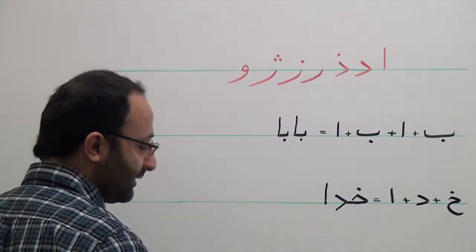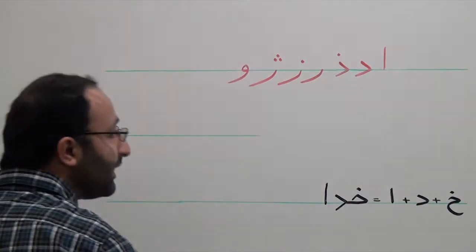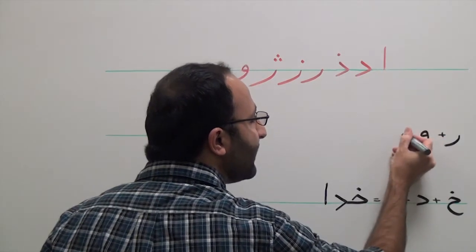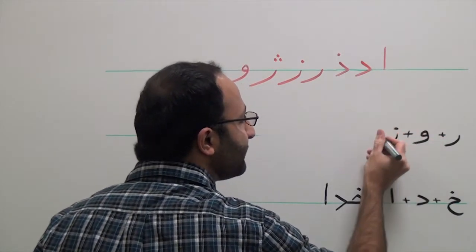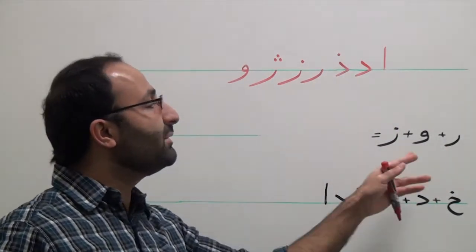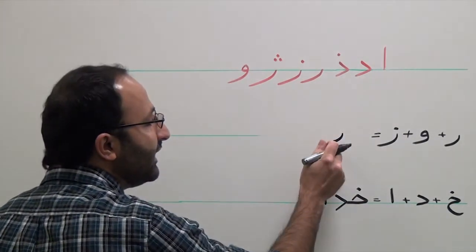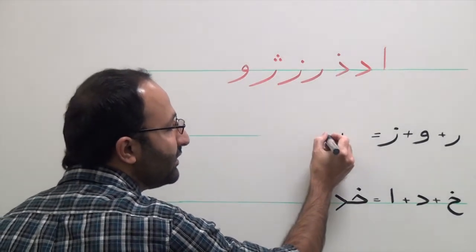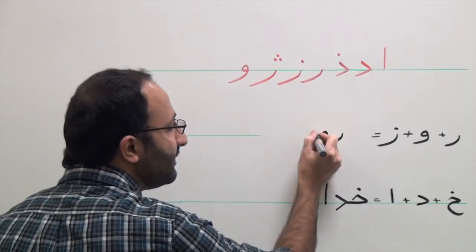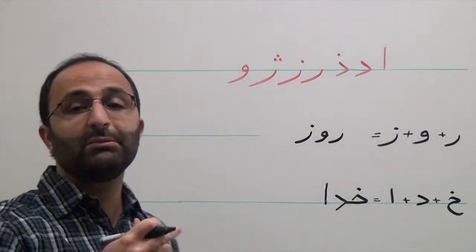Now, if you have Re, Vav, and Ze, all three of these characters are characters that cannot be connected to a following character. So they are written separately: Re cannot be connected to the following character Vav, and then Vav cannot be connected to the following character Ze. This word, in Persian, means 'they.'